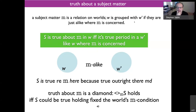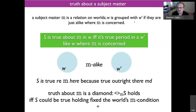Here's an important notion I'm not sure I ever introduced. We talked about sentential subject matter, but let's talk about free-floating subject matters — like the number of stars or where the Pope lives. A sentence is true about a subject matter M in a world if it's true outright in another world that's just like the first where that subject matter is concerned. There's nothing in the world's M-condition to make the sentence false.